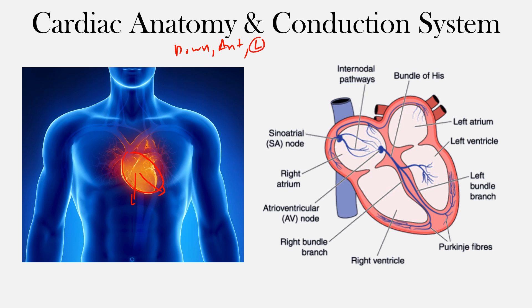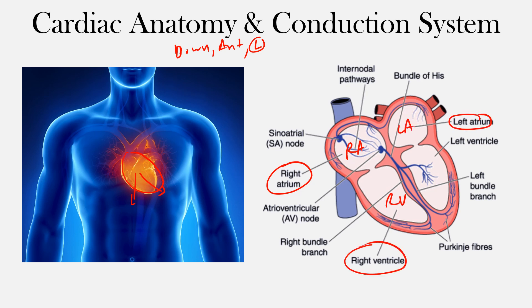There are four main chambers of the heart you should be aware of: the right atrium, the left atrium, the right ventricle, and the left ventricle. So you have two atria — left and right — as well as a right and left ventricle.